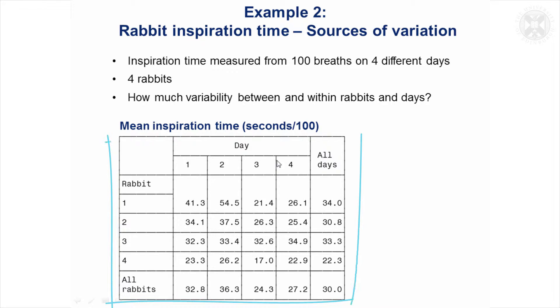This is just a summary of the means for each of the rabbits on each of the days. You can see that if you look at the columns and the mean for all the rabbits on the different days, they do vary quite a lot. On day two the average inspiration time, and this is in hundredths of a second, so it's just very fast values. The average for day two is quite a lot higher than the average for day three, so there did seem to be variability.